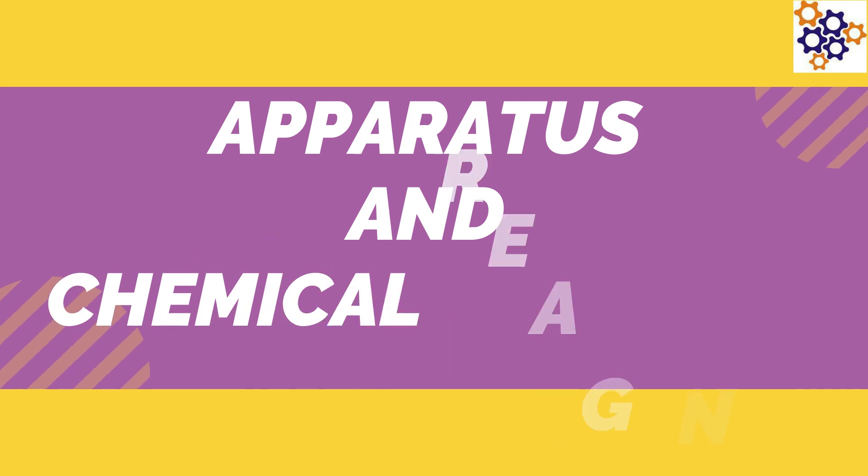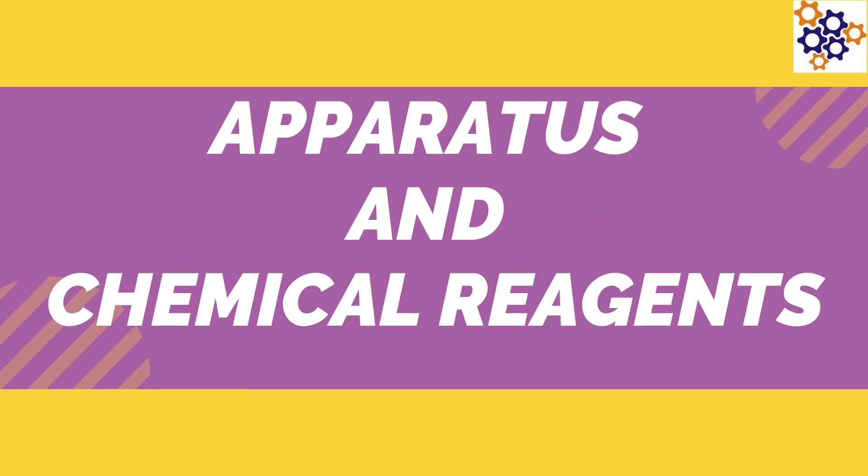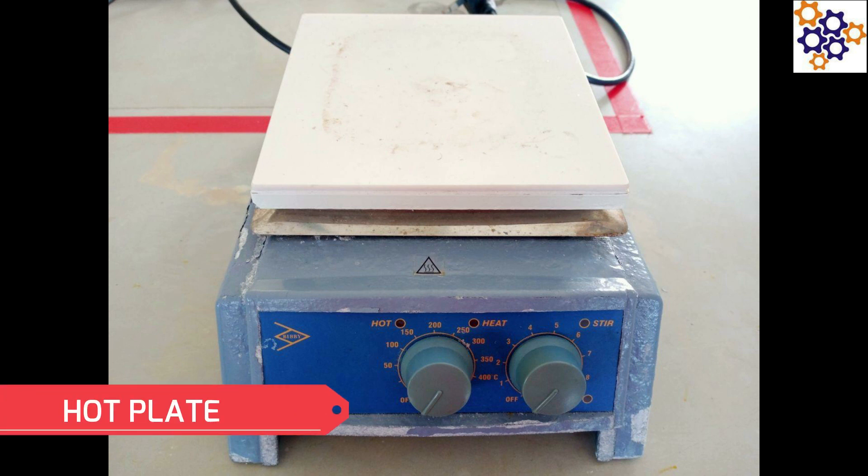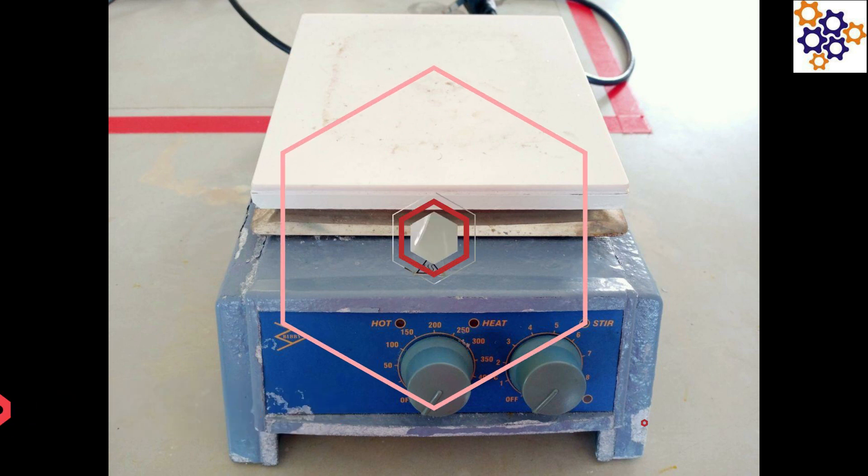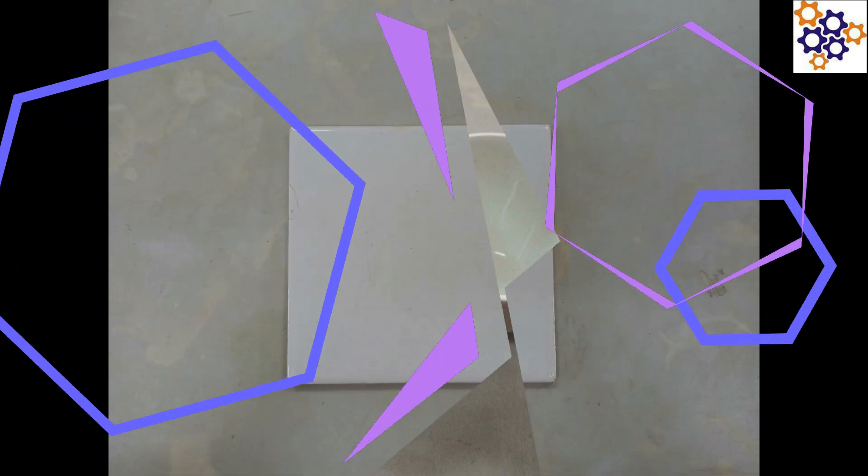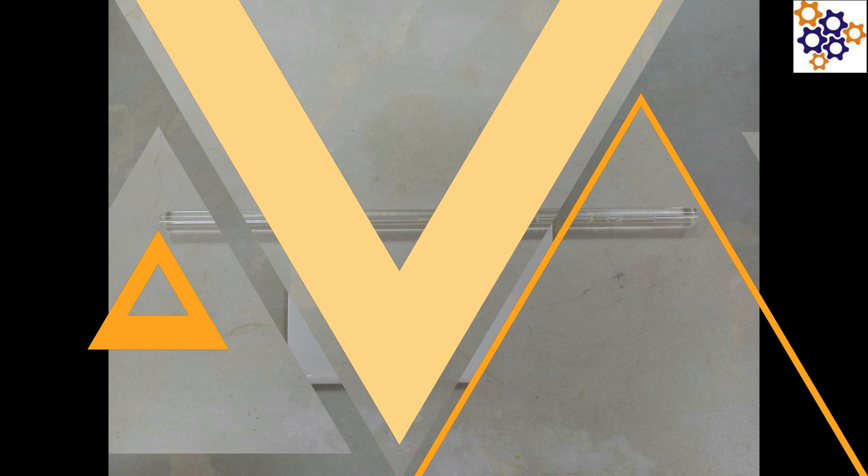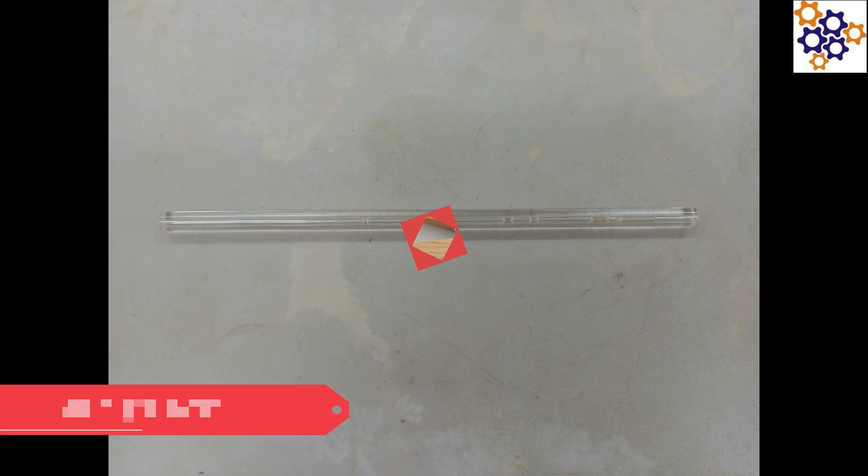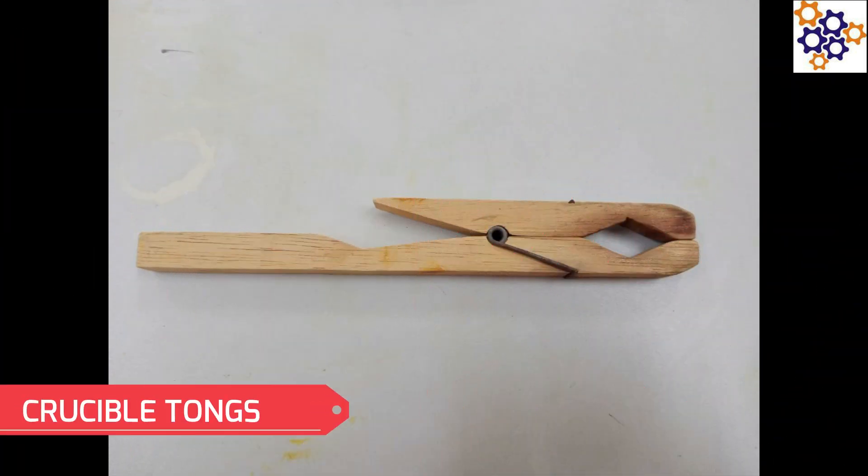The apparatus and chemical reagents that will be used in this experiment are: hot plate, crucible, wire tie, glass rod, and crucible tongs.